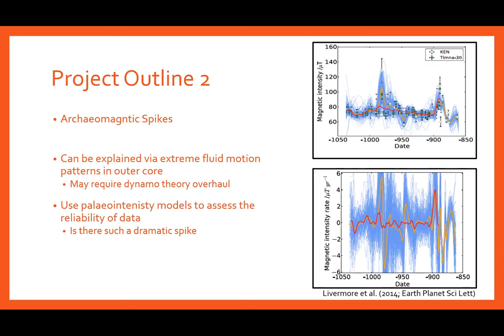These archaeomagnetic spikes can be seen in the graph on the right. The upper panel shows the intensity of the field against time, while the lower shows the rate of change per year during this period. The two spikes have rates of up to four to five microtesla per year, which is huge in comparison to the current variation of around 0.1 microtesla. These large spikes can be explained by extreme patterns of fluid motion that occur in the outer core; however, it is thought that these patterns are physically unrealistic given current dynamo theories. While the paleointensity data used appears to be reliable, by using the paleointensity models it is hoped that a more definitive answer about their reliability can be found, and should they be found reliable, this may cause current dynamo theories to be overhauled.